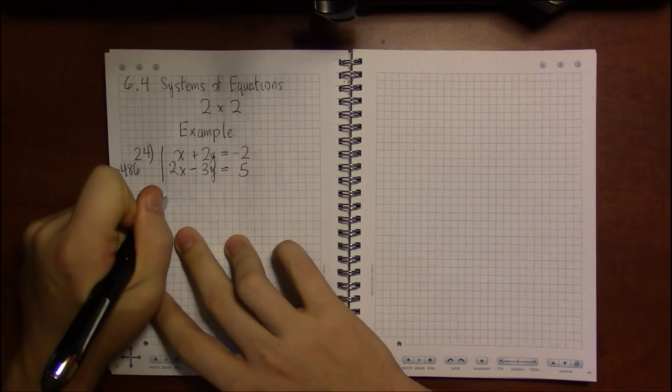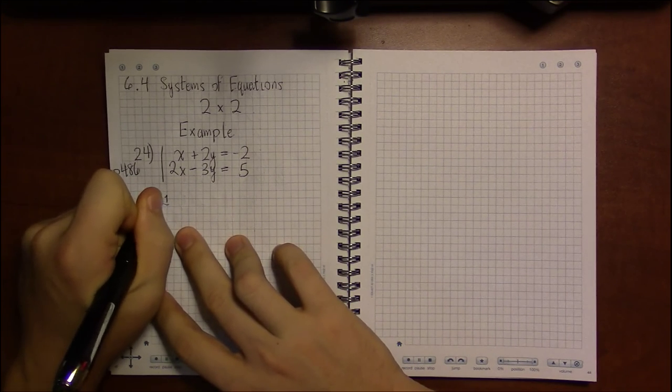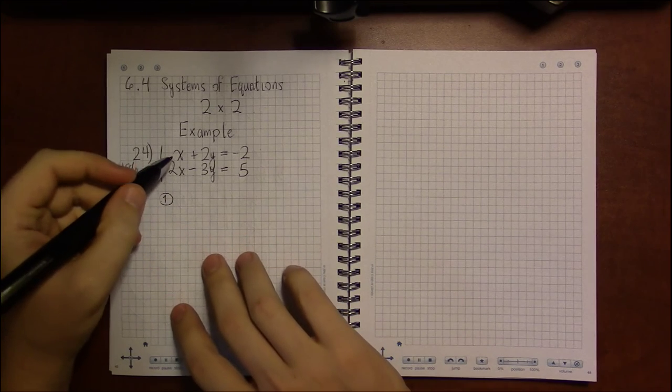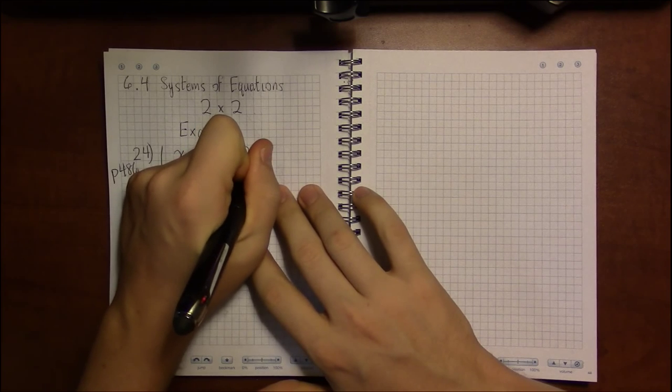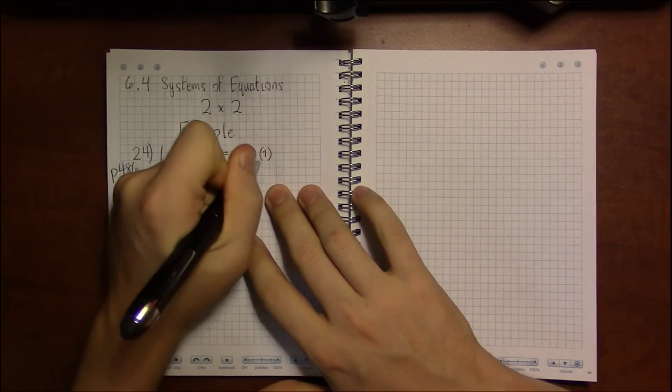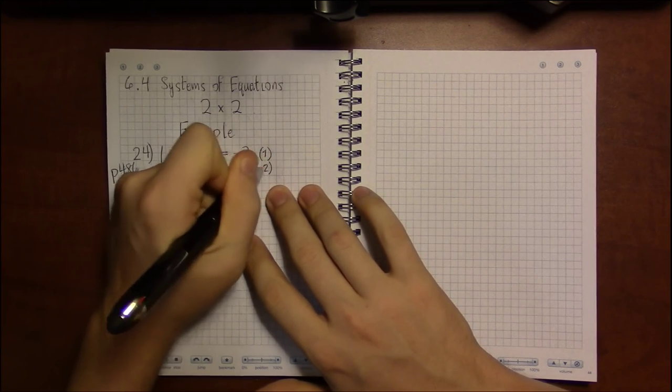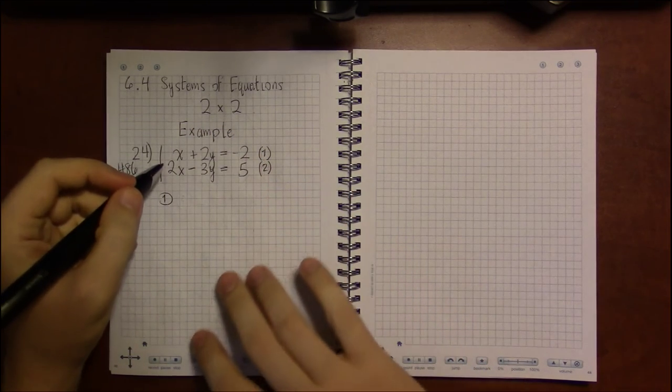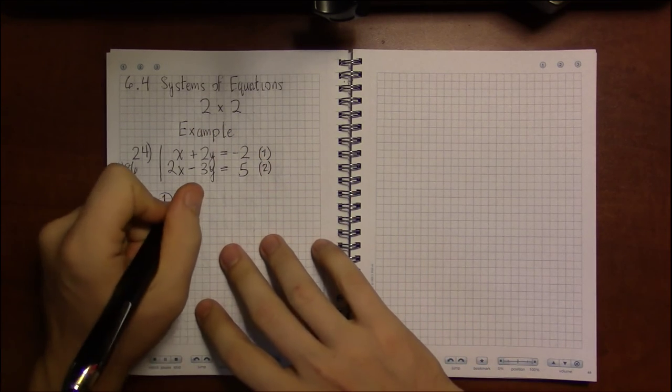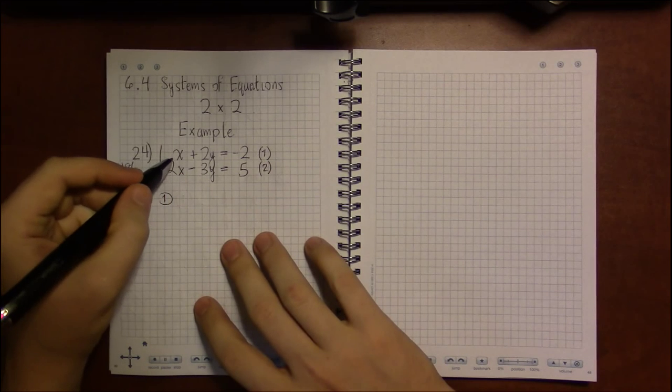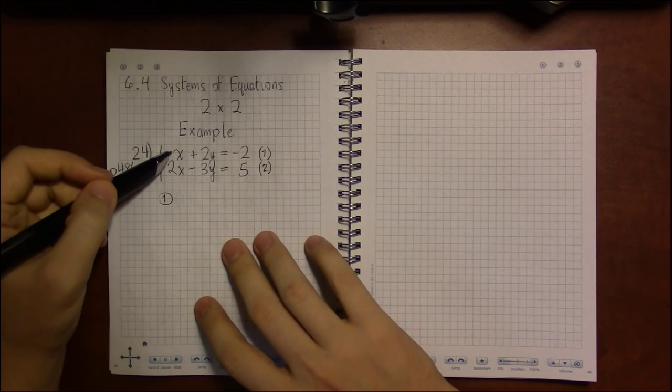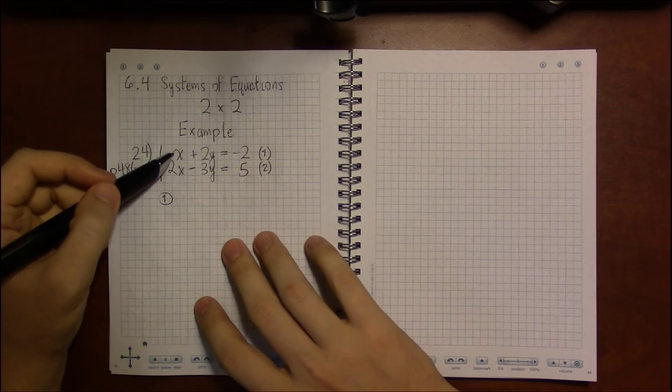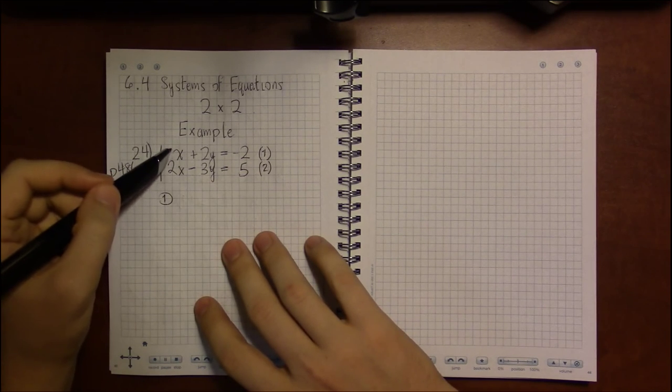Using the substitution method, our first step is to pick one of the two equations and solve that particular equation for one of the variables. Let's pick equation 1 and solve for x.